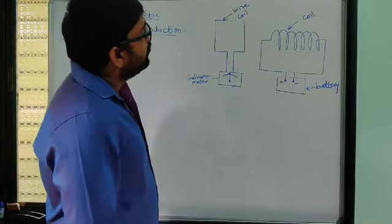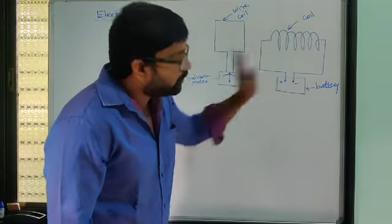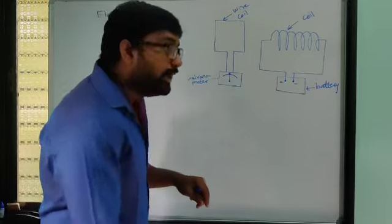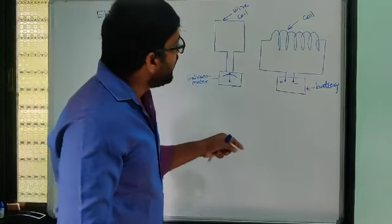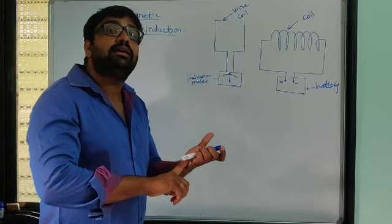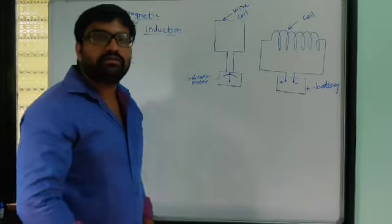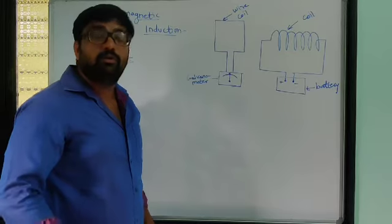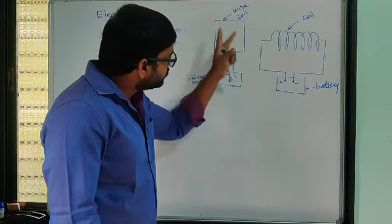Now we start electric current through the first coil by turning on the switch of the battery. At that very small instant when we turn on the connection, we see a deflection in the galvanometer, which then returns to its original position.